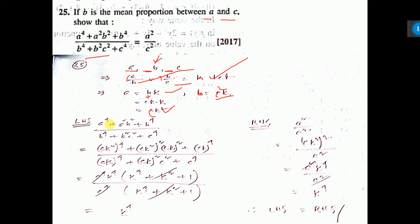Now, take left hand side, put the value. You can take C to the power 4, K to the power 4, common. Then here it is K to the power 4 plus K square plus 1, and down,